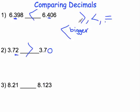On the left, we have a 2 in the tenths digit and we have a 1 on the right in the tenths digit. Because 2 is greater than 1, we know that 8 and 21 hundredths is going to be greater than 8 and 123 thousandths.